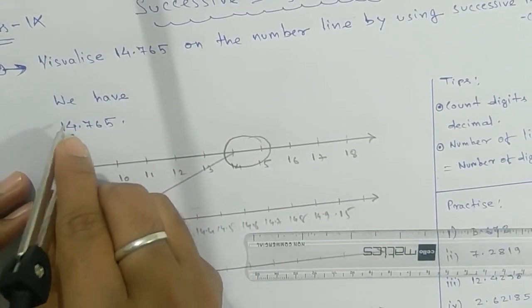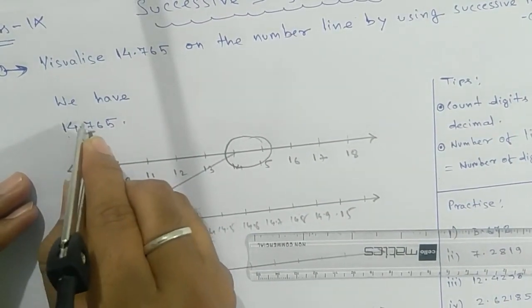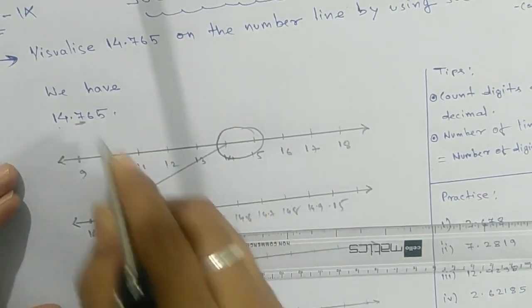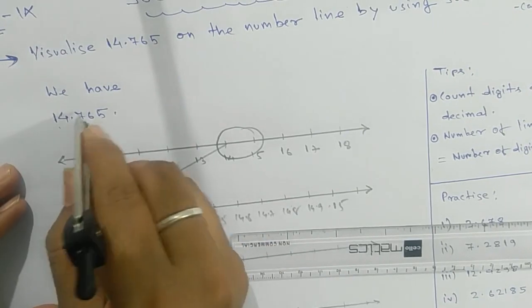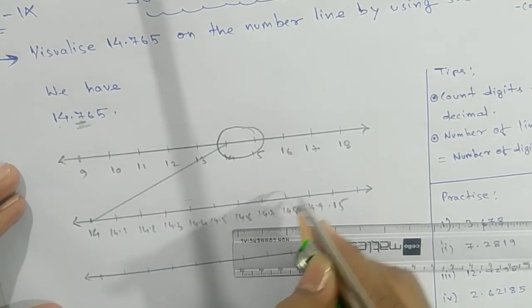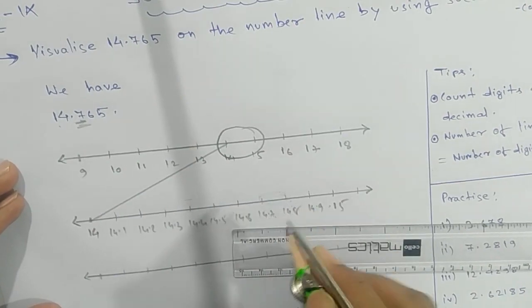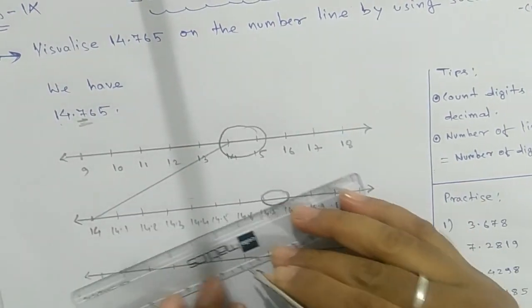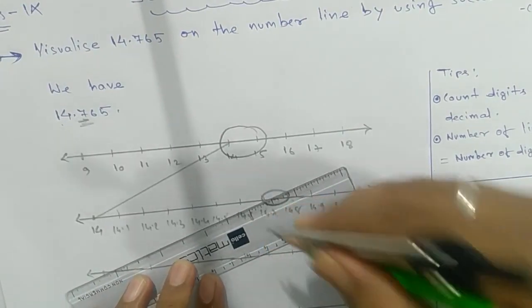Look at the number, 14.7. Go with 14.7. Your number will lie between 14.7 and 14.8, so we'll magnify this part. To magnify, we need 14.7, so join them.